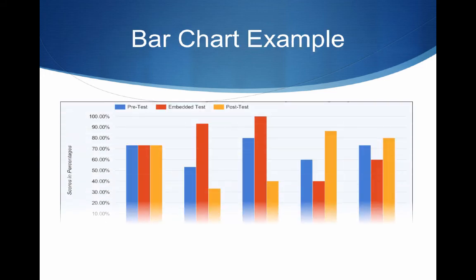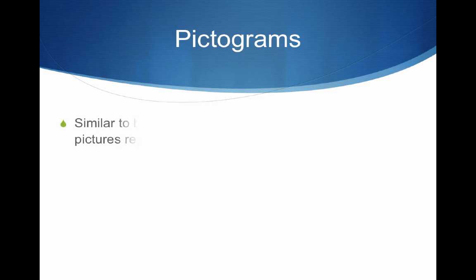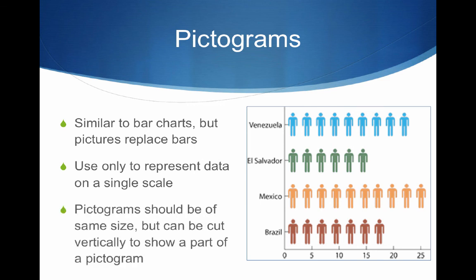Let's look at this good bar chart example. Very quickly, you can discern from the shape what the message is. You can see that in the post-test, these two items were very low — so that's something we would want to look into. For pictograms, these are similar to bar charts, but pictures replace the bars. You use these only to represent data on a single scale. Pictograms should be of the same size, but can be cut vertically to show part of a pictogram.